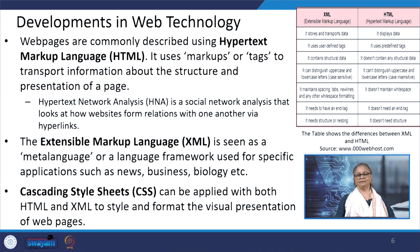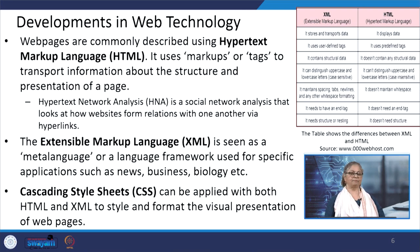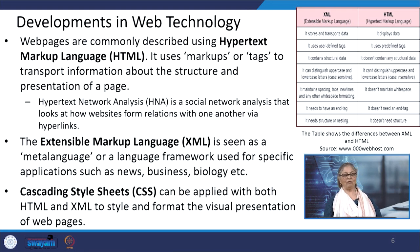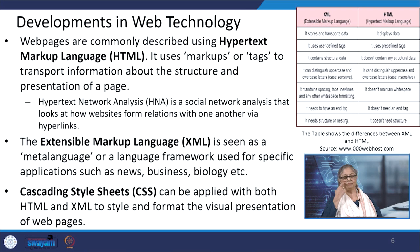In the table on the right-hand side, the major differences between HTML and XML are explained. HTML uses markups or tags to transport information about the structure and presentation of a page. Hypertext network analysis, or HNA, is a social network analysis that looks at how websites form relations with one another via hyperlinks. XML is seen as a meta-language or language framework used for specific applications such as news, business, biology, etc. Cascading style sheets can be applied with both these languages to style and format the visual presentation of the page.